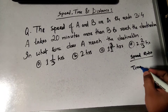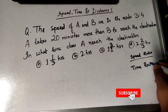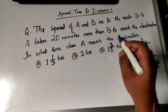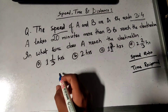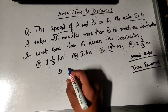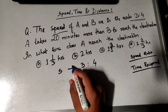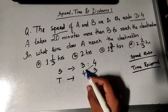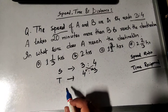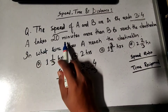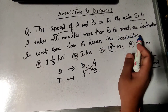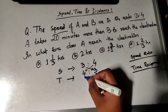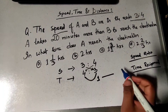The speed ratio is 3 to 4, so the time ratio is 4 to 3. A takes 20 minutes more than B, so the difference in the time ratio is 4 minus 3, which equals 1 unit. Therefore, 1 unit is equal to 20 minutes, meaning A's total time is 4 units, which equals 80 minutes.